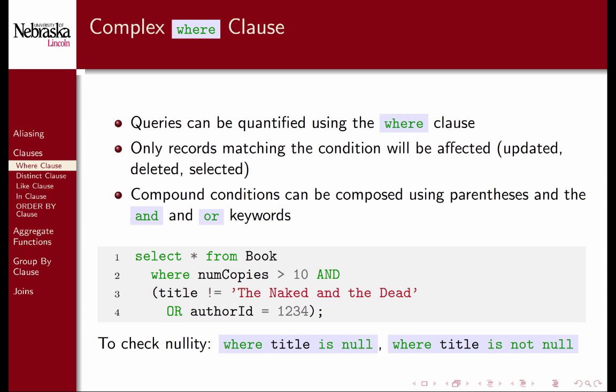We can perform queries with more complex where clauses by using compound conditions. We can use the logical keywords and and or to combine conditions. As with programming languages, and operators have a higher precedence than or operators. You can use parentheses to give compound conditions a higher precedence. The following example contains several combinations of compound conditions. You cannot use the equality operator for null values however. Instead you must use the syntax is null or is not null.